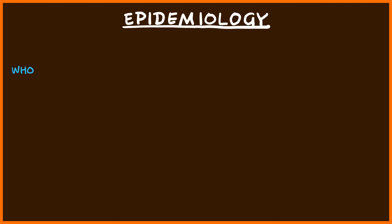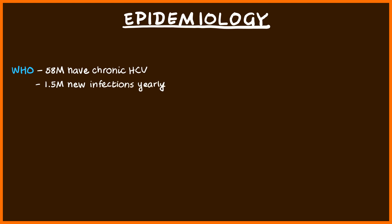Let's start talking about the epidemiology of the hepatitis C virus. According to the WHO, worldwide there are about 58 million individuals who have chronic hepatitis C virus, and there are about 1.5 million individuals who get new infections every year. So this is a considerable worldwide problem. In the US, it's a growing problem — between 2013 to 2020, the number of individuals with hepatitis C doubled, and if you go back further since 2005, it's actually quadrupled.